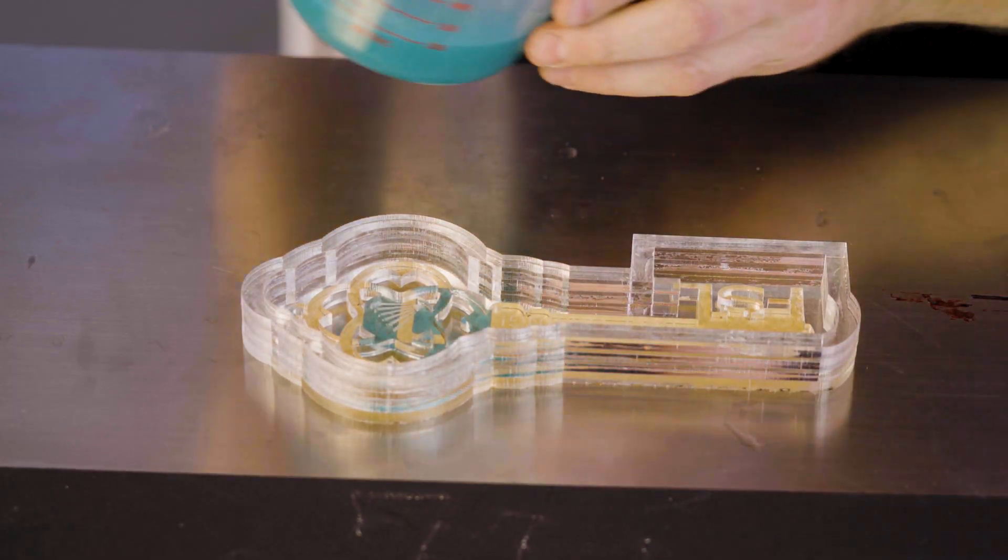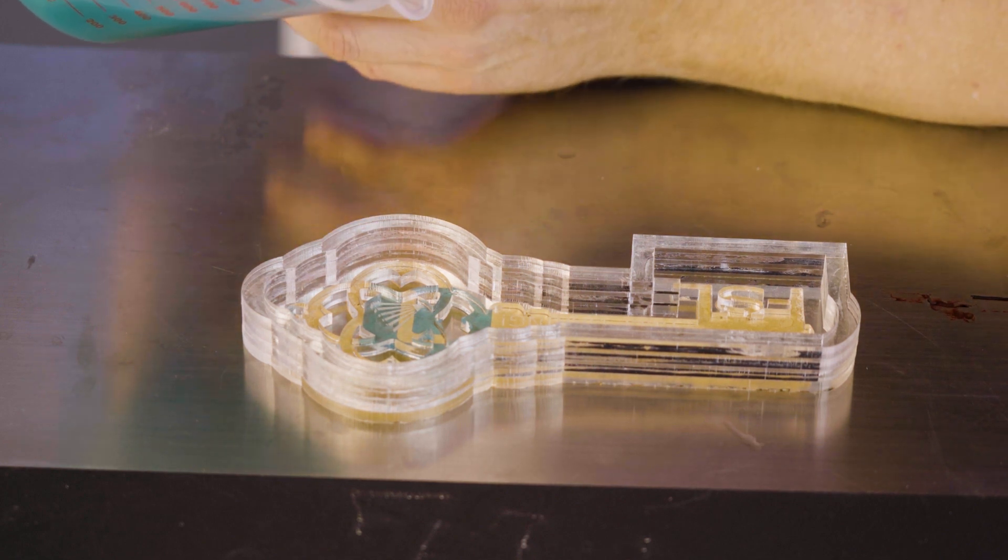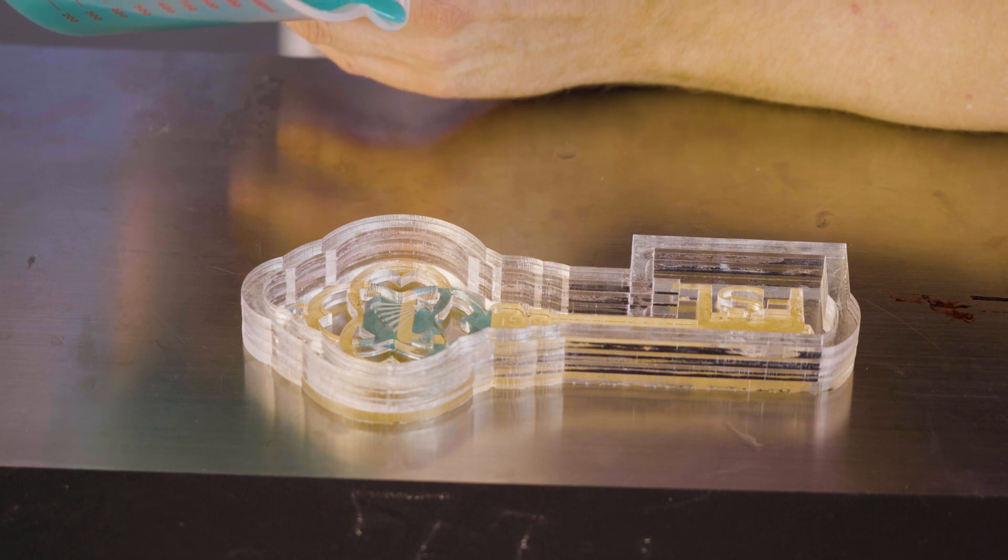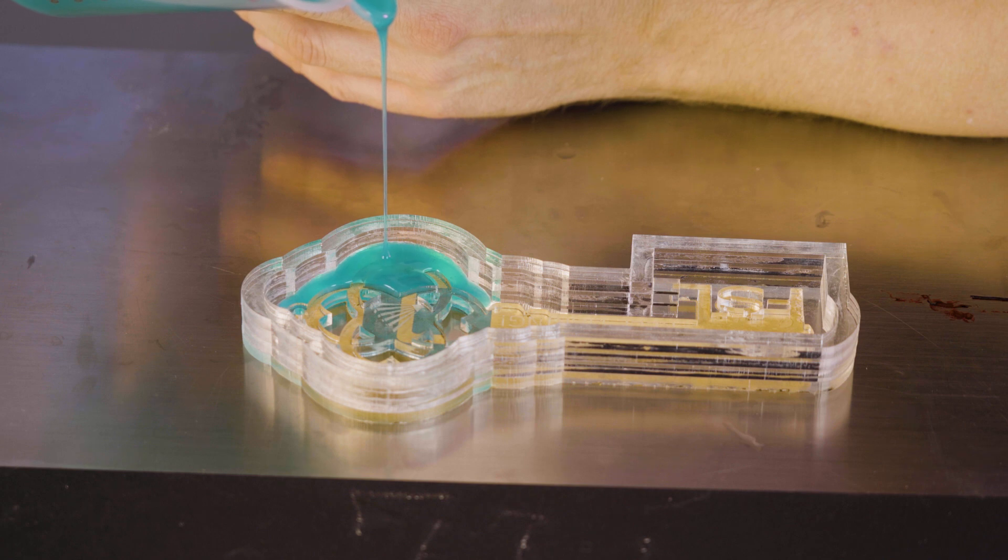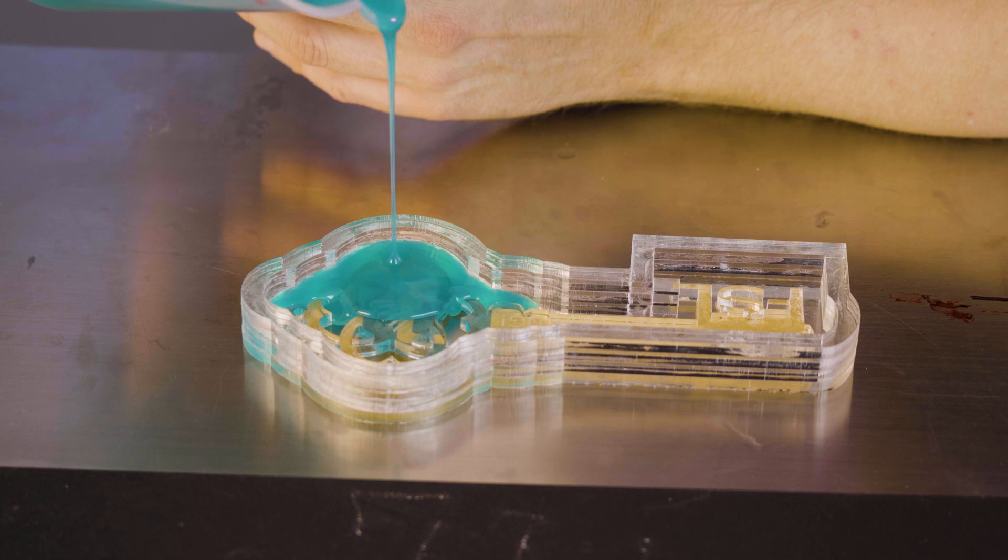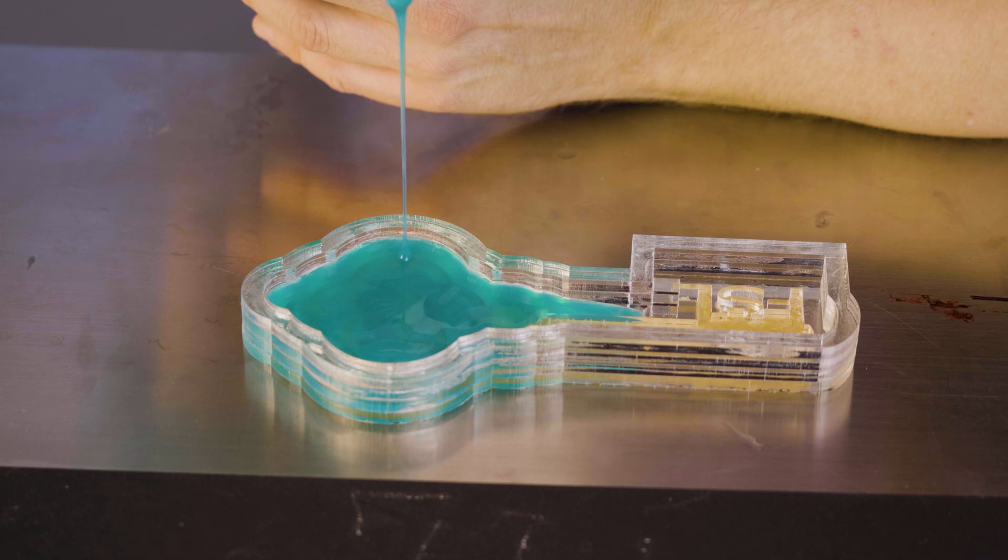Now we're going to take our silicone and slowly pour it, not on the direct object, which in this case is the key, but around it. We're just going to keep it in that spot with a small stream until it covers everything. This is technically bubble-free silicone, but it will capture bubbles if you do this improperly. So we're just going to do it nice and slow and let the silicone seep into every crevice.